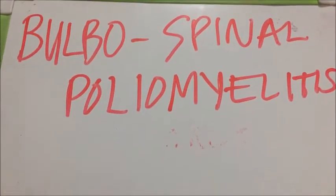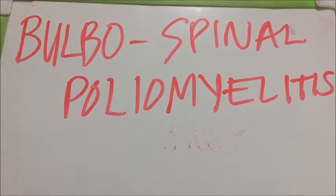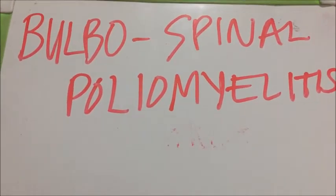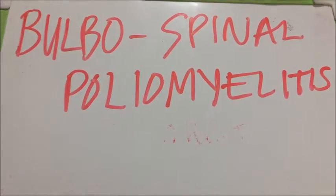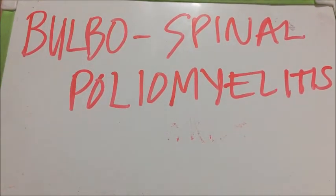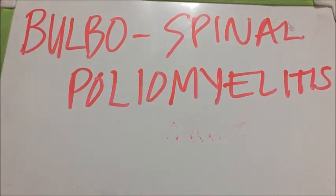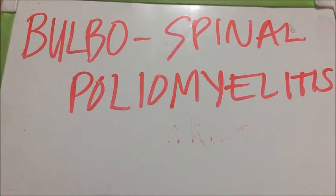Bulbospinal poliomyelitis includes almost 20% of cases of polio. This is a combination of spinal paralytic polio and bulbar polio.